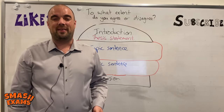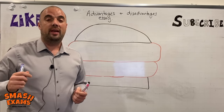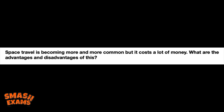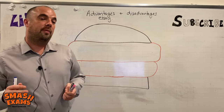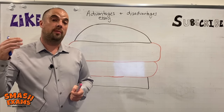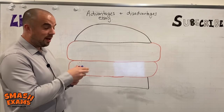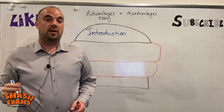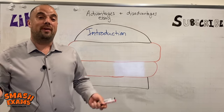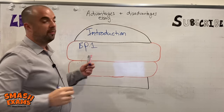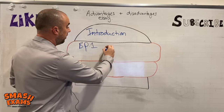Up next is the advantages and disadvantages essay type. The next essay that fits into the structure is the advantages and disadvantages question. You'll get a question something like this: 'Space travel is becoming more and more common but it costs a lot of money. What are the advantages and disadvantages of this?' This type of question is not asking for your opinion — it's asking you to sum up the advantages and disadvantages of the topic. So you start off with an introduction where you paraphrase the question and say that you are going to look at the advantages and the disadvantages. Then in body paragraph one you discuss all the advantages.